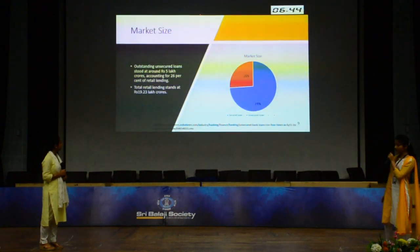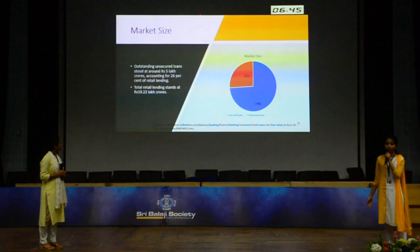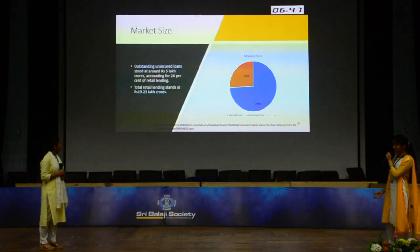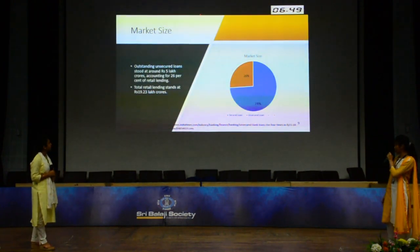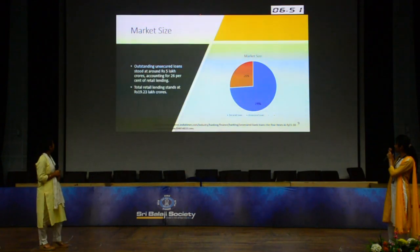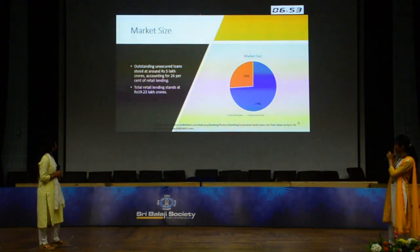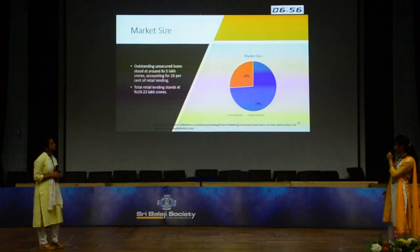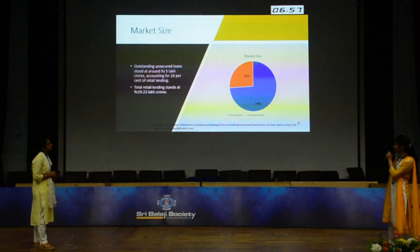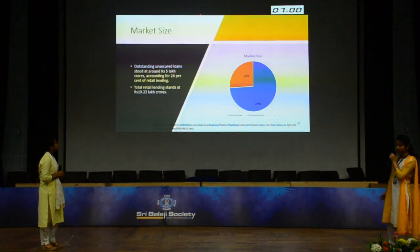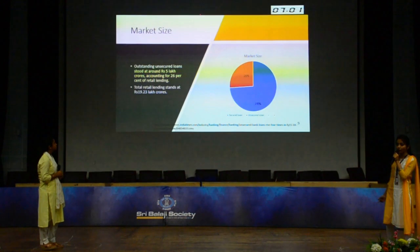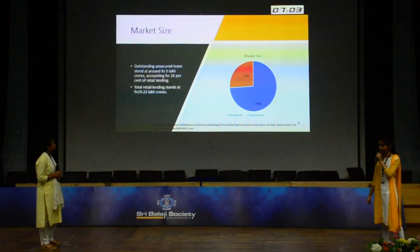This is the market size, based on the March 2018 report. We can see that unsecured loans consist of about 5 lakh crore rupees of the total 19.23 lakh crore rupees, which is about 26% — compared to 21% in the previous three years.